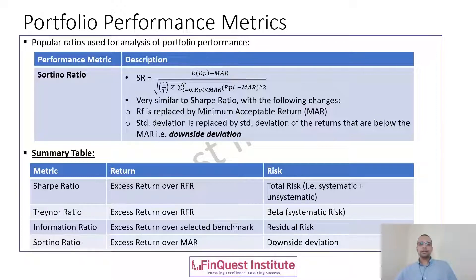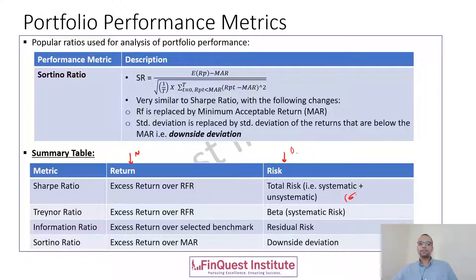Here is a quick summary table of these ratios from a return and risk perspective — numerator and denominator for each. The Sharpe ratio: numerator is excess portfolio return over the risk-free rate; denominator is total risk, which is systematic plus unsystematic risk, represented by sigma. The Treynor ratio: numerator is the same excess portfolio return over RFR; denominator is systematic risk only, represented by beta.